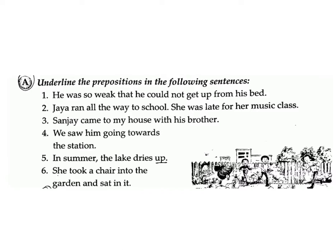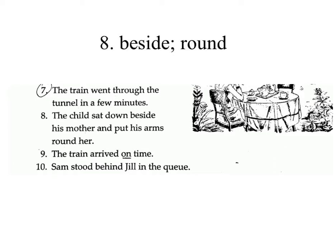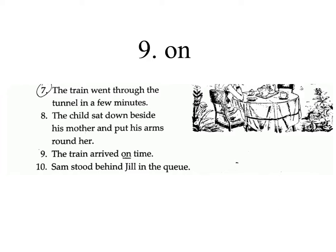Sentence 3: Sanjay came to my house with his brother. Answer: to, with. Sentence 4: We saw him going towards the station. Answer: towards. Sentence 5: In summer, the lake dries up. Answer: in. Sentence 6: She took a chair into the garden and sat in it. Answer: into, in. Sentence 7: The train went through the tunnel in a few minutes. Answer: through, in. Sentence 8: The child sat down beside his mother and put his arms round her. Answer: beside, round. Sentence 9: The train arrived on time. Answer: on.